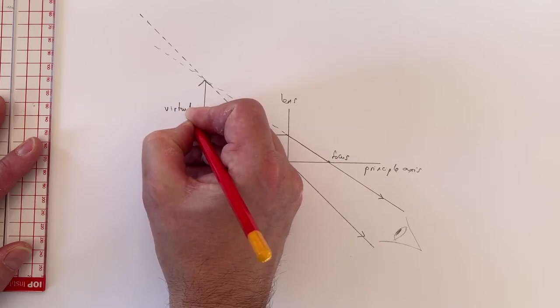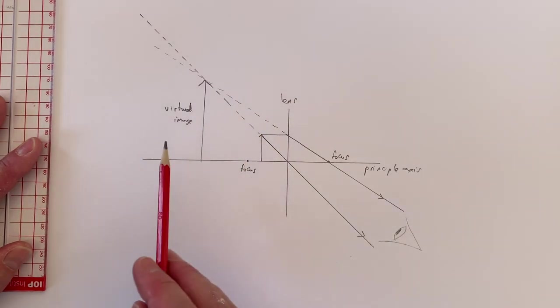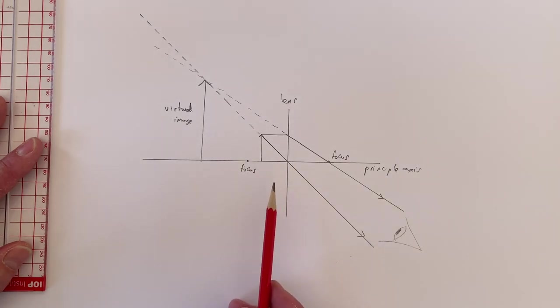Unlike the image I had earlier, this image is no longer inverted. It's the correct way around, the normal orientation. And this is the way in which a magnifying glass works.